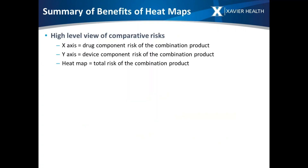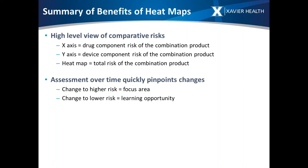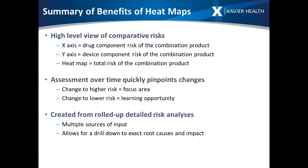To summarize the benefits: the heat map is a high-level view that gives you a comparative analysis of risks. You define the x-axis and y-axis — in our case, drug and device components — and the intersection is the total risk of the combination product. You do that assessment over time and can quickly identify changes occurring. It's created from a rolled-up detailed risk analysis, so don't lose sight of the data underneath — it's there to help you understand what you're seeing at the aggregated level and drill down into the why behind the data.